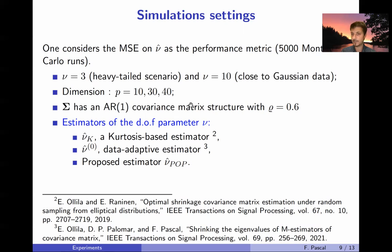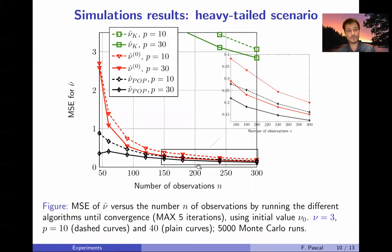And sigma is an AR-1 covariance matrix structure with 0.6 as parameter. We compare to two state-of-the-art other estimators. First one based on the kurtosis, so that is the starting point of our algorithm. And another one that is data, and both can be found in those papers.